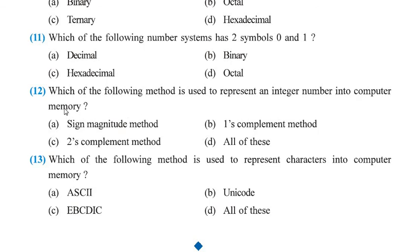Question number 12: Which of the following methods is used to represent an integer number in computer memory? An integer number can be represented using all three methods — sign-magnitude, one's complement, and two's complement. So the answer here is option D, all of these.